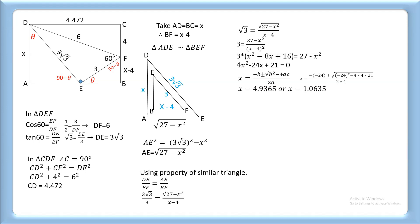We get x = 4.9365 or x = 1.0635. For x = 1.0635, BF = x - 4 = 1.0635 - 4 = -2.9365, which is not possible. Therefore, we reject x = 1.0635.